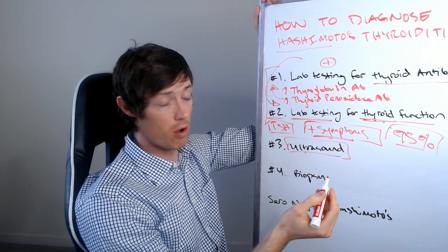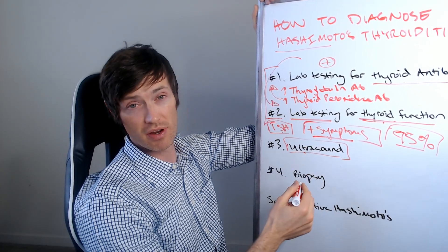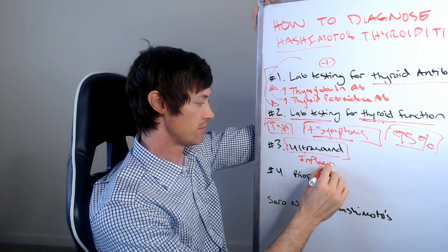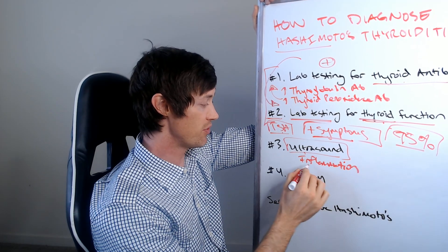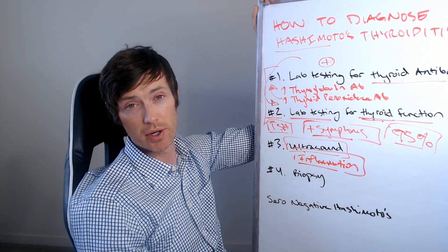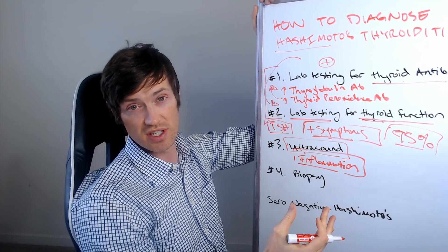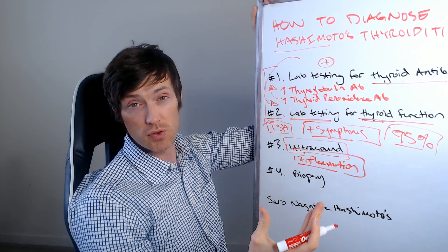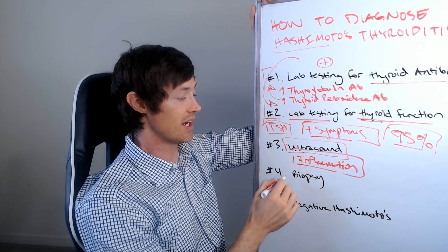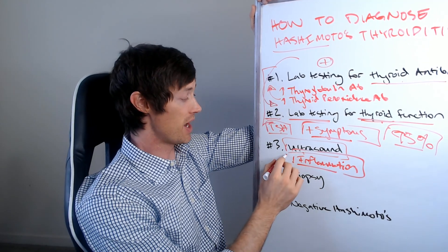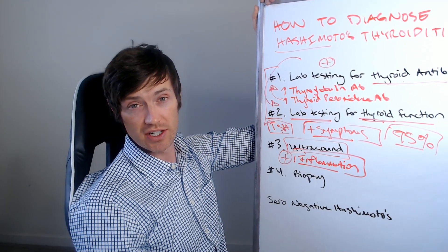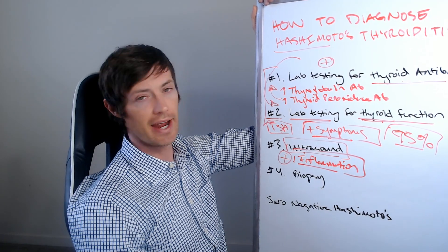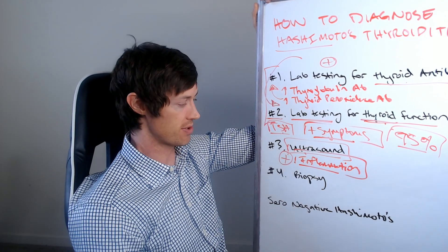And the hallmark of diagnosing Hashimoto's thyroiditis via ultrasound is that you will see inflammation. So if you see anything in your report of your thyroid ultrasound which suggests that there is inflammation or a bumpy texture or something like that, or infiltrates of white blood cells, that those all indicate that Hashimoto's is likely. So if you have a positive ultrasound, that is sufficient by itself to diagnose Hashimoto's thyroiditis, because you should never have inflammation just in the thyroid gland. And the number one cause of inflammation in the thyroid gland is Hashimoto's.